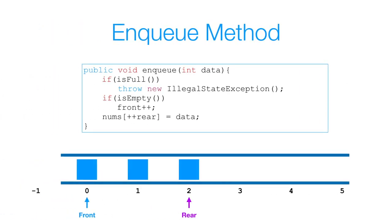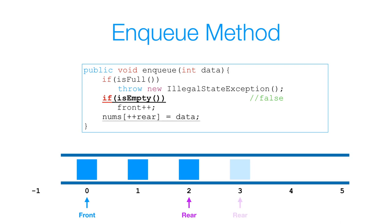Now let's look at the enqueue method. It takes in an argument data to add to the queue. The first thing I do is check if the queue is full — if it is, I throw a new IllegalStateException. If the queue is not full, I check if it's empty, because in an empty queue front and rear are both negative one. In that case I increment front to index zero. If it's not empty, I simply increment my rear by one index and insert the data at that position.